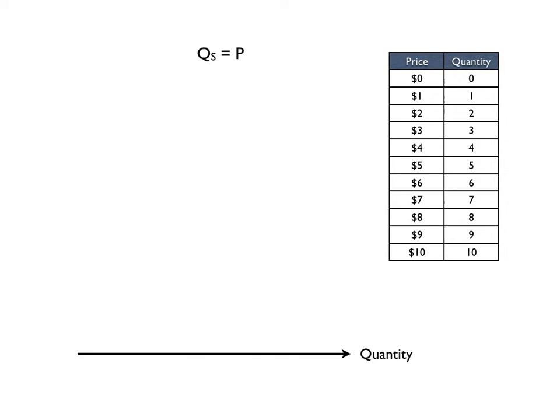Then we can do it graphically. This will start out with quantity on the x-axis, price on the y-axis. We can plot them out based on our chart and the mathematical equation. At a price of zero, zero will be supplied; at a price of ten, ten will be supplied.